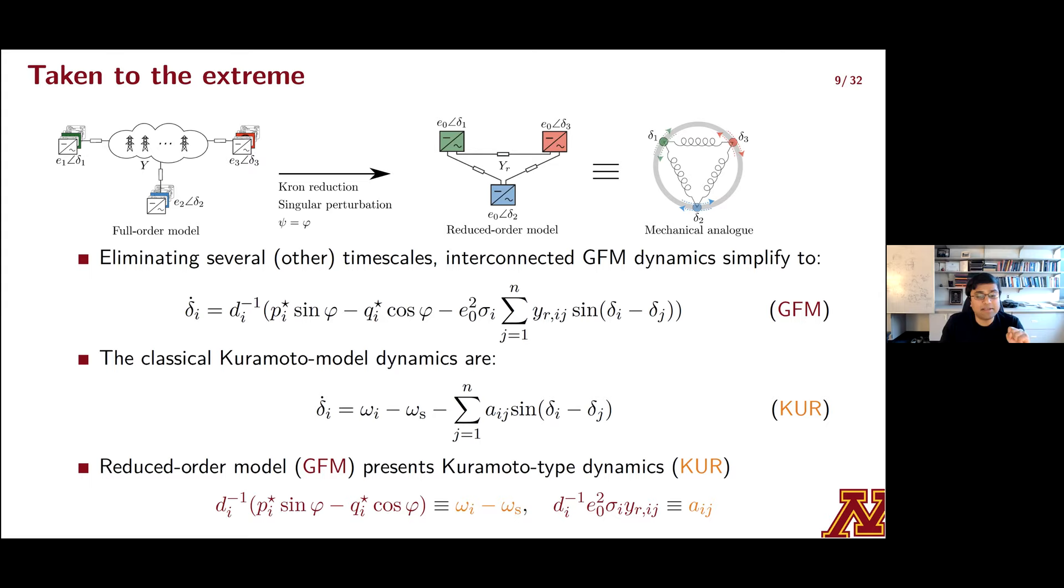So it's quite clear that the reduced order GFM dynamics and the Kuramoto dynamics have the same structure. So if you focus on the parametric equivalences that we identified in the last equation, you'll see why this is. Whatever you can say about the Kuramoto model with parameters that are highlighted in orange, you can now infer about the grid forming interconnected model with the parameters highlighted in red. And it turns out that a lot has been said about Kuramoto models in the literature.